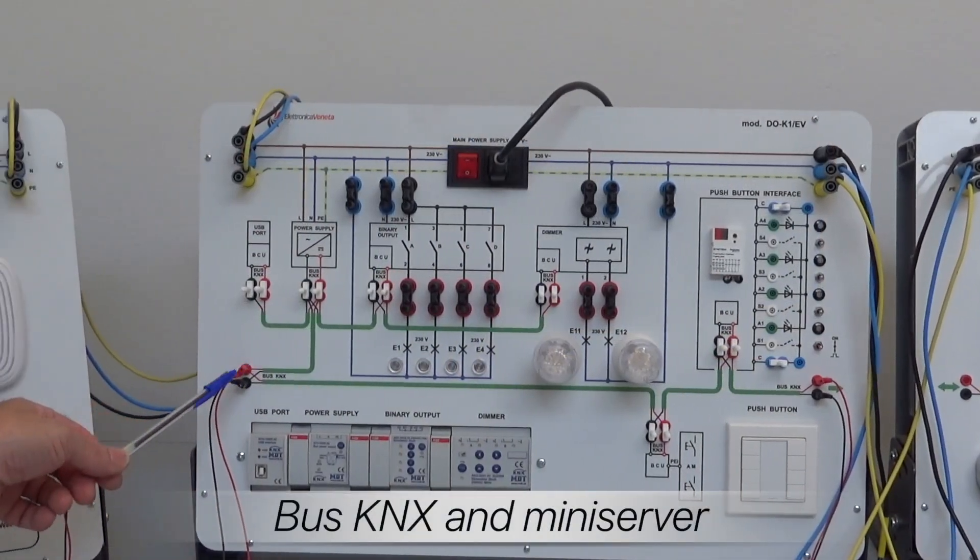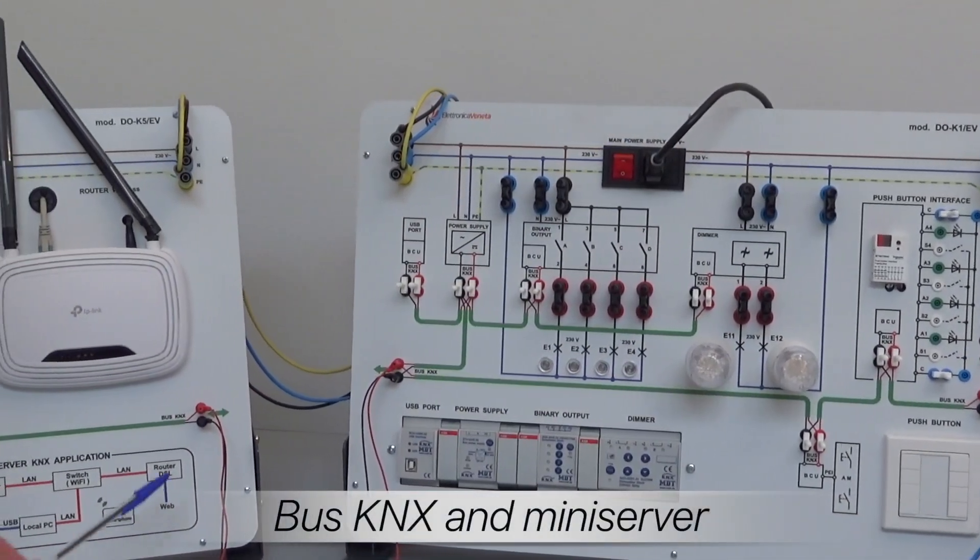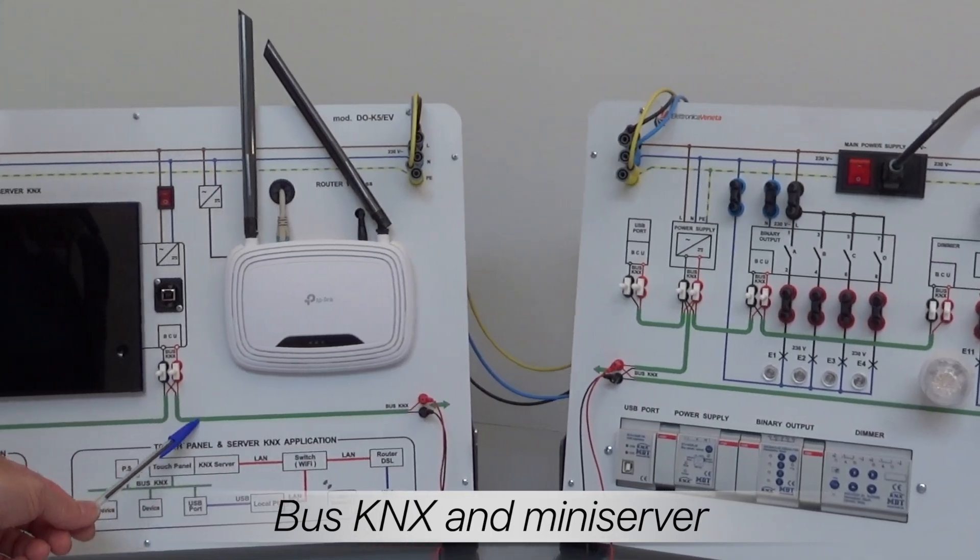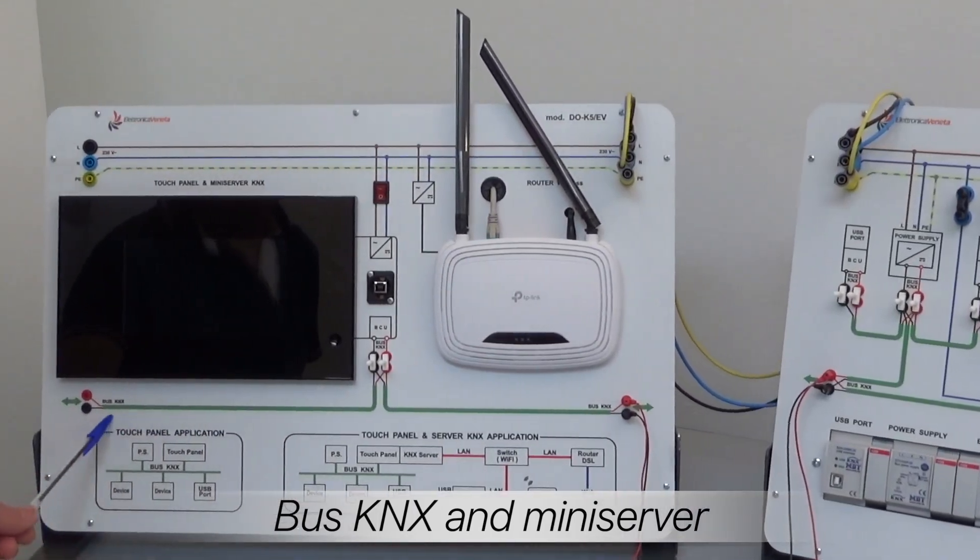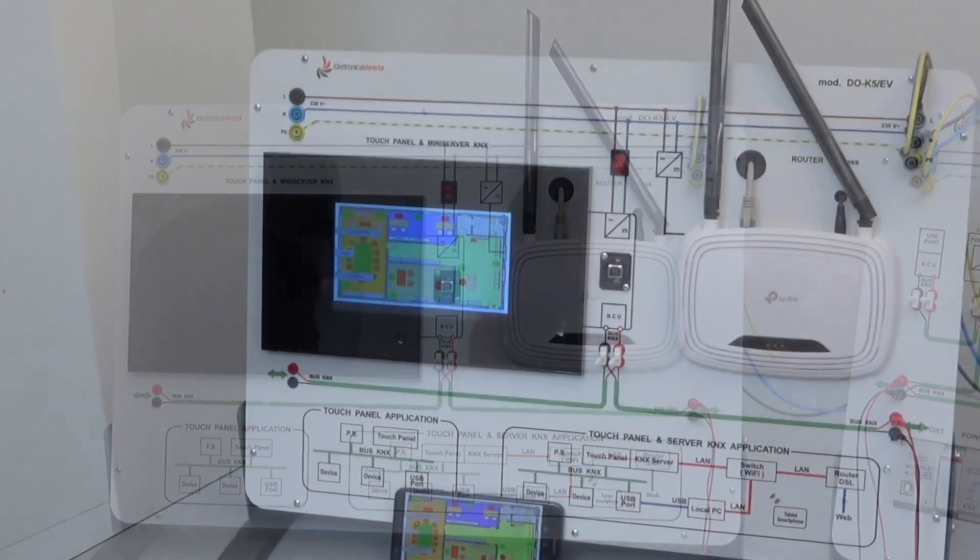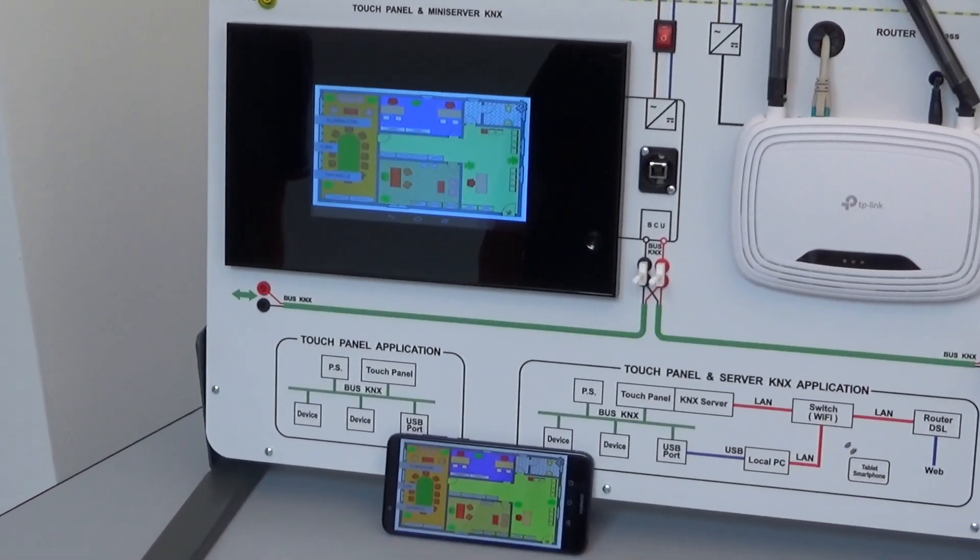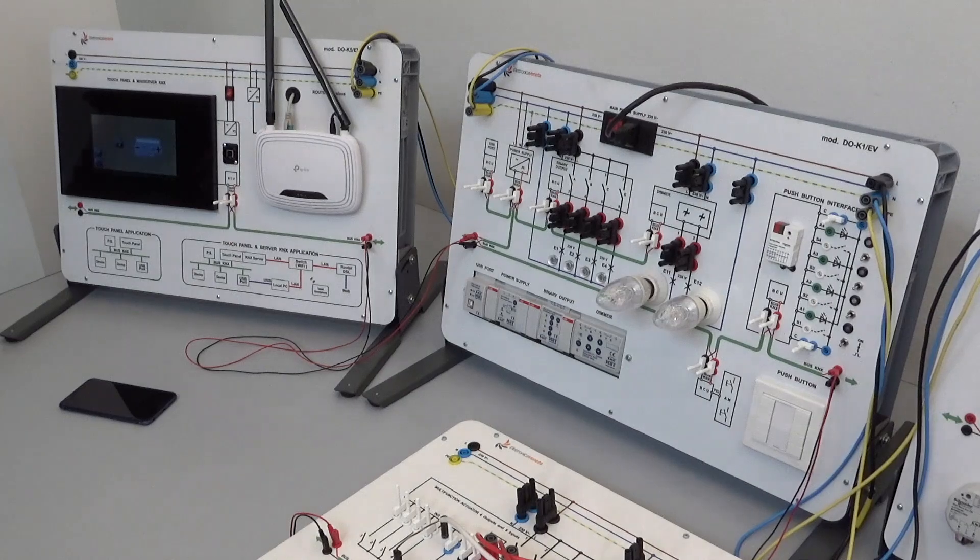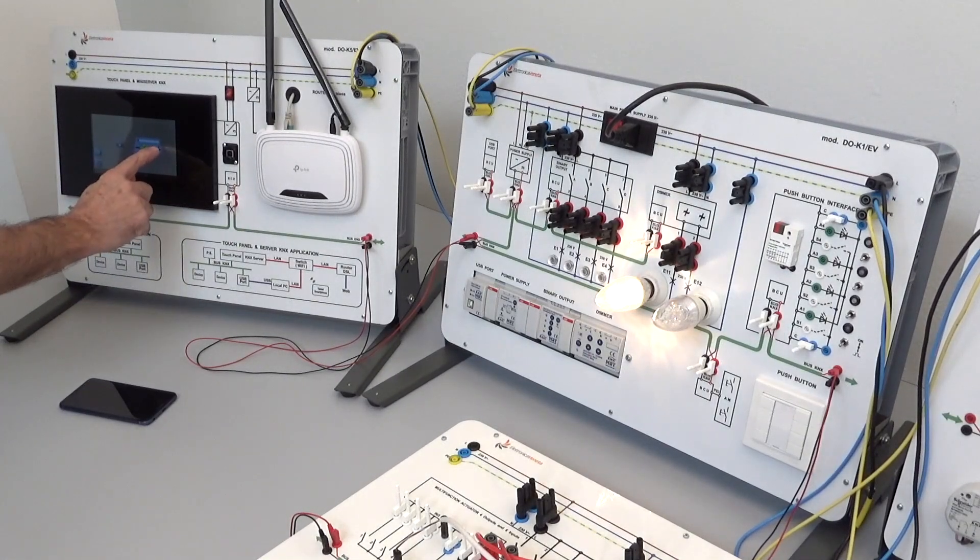The DOK5 module includes a mini-server to control the connection of the modules and their management via KNX bus. Each component can be activated using a touch screen display.